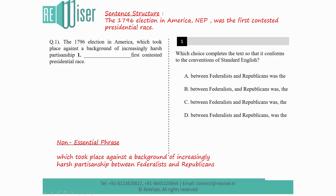If we understand the sentence structure, we can see which option matches it by the process of elimination. We are looking for a comma after 'Republicans' to end the non-essential phrase. We are not looking for any comma between 'Federalists' and 'Republicans' because they are just two items in series. The only commas are at the beginning and end of the phrase — meaning after 'Republicans' you must have a comma.